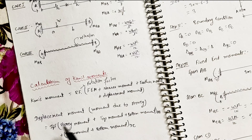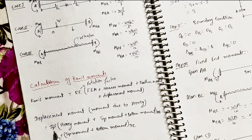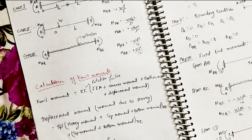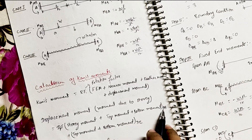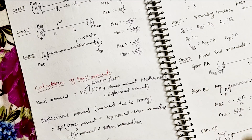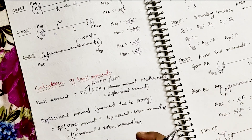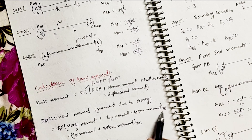The displacement moment is the moment due to story sway. The formula is: Displacement Moment = DPF × (story moment + top moment + bottom moment), where DPF is the displacement factor. We always calculate the displacement moment for vertical members only, not for horizontal members. For a single-story frame with two vertical members, we calculate the displacement moment for both vertical members using their respective top and bottom moments.